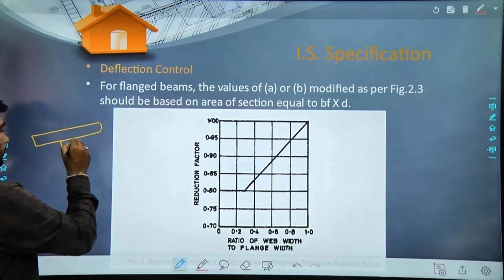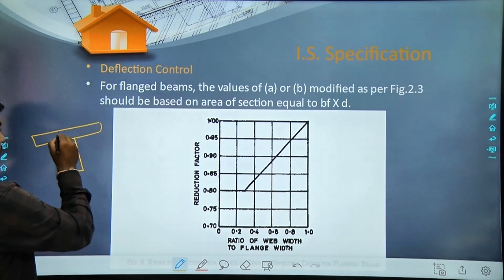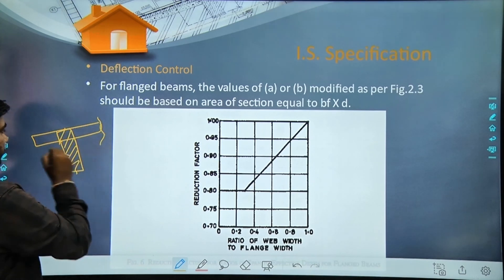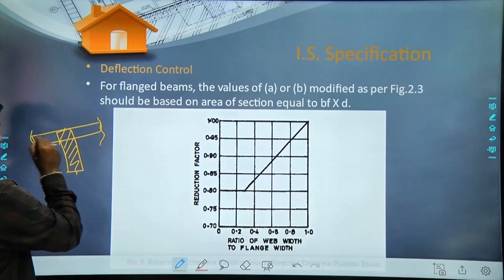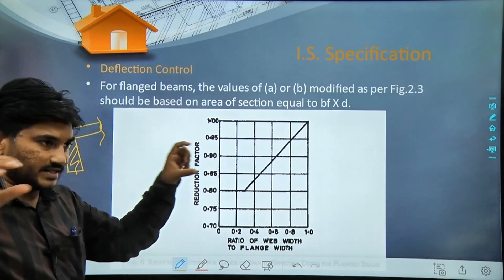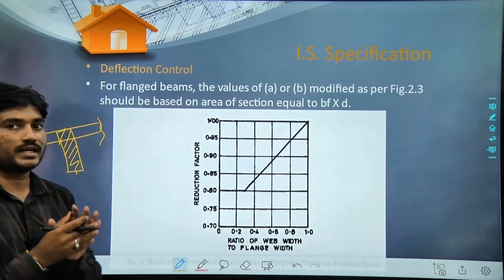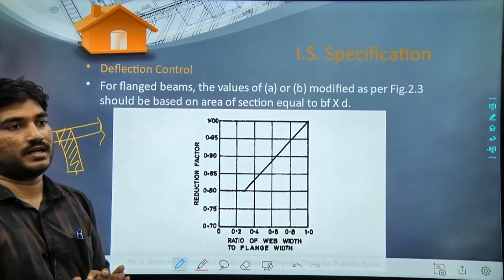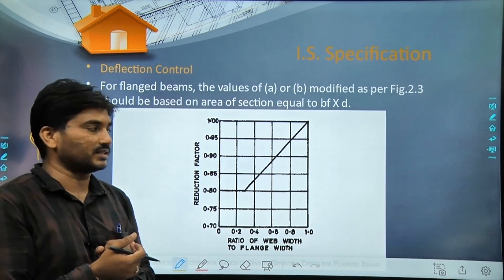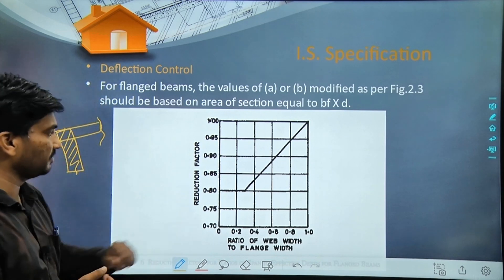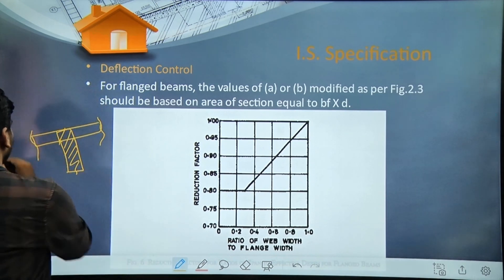Then for flange beam - flange beams are like this, for example if there's a beam like this, we call it T beam or I beam. This is beam and this side is slab. The area of the slab, the flanges of the slab, we consider in the beam so that the depth of our beam becomes less. So we take support of the slab also. This is called flange beam. In the case of flange beam we can reduce like this.